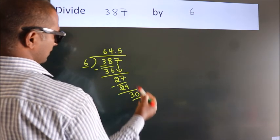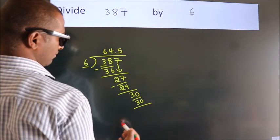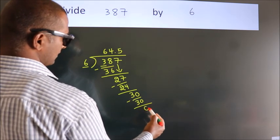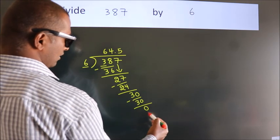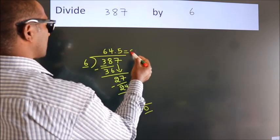Six fives, 30. Now we subtract. We get 0. Here we got remainder 0, so this is our quotient.